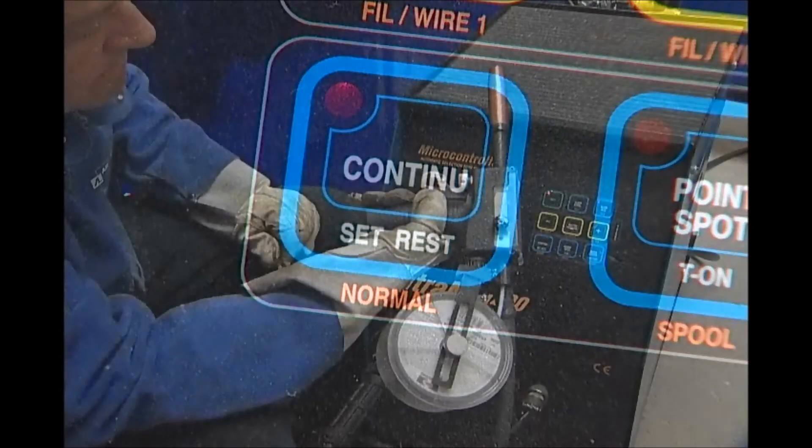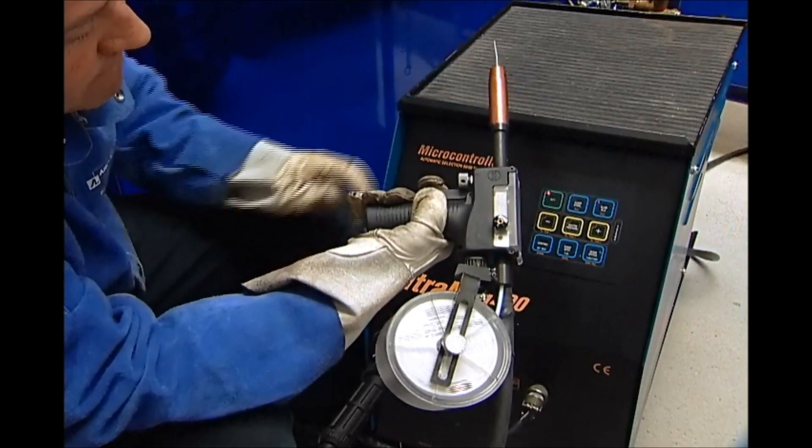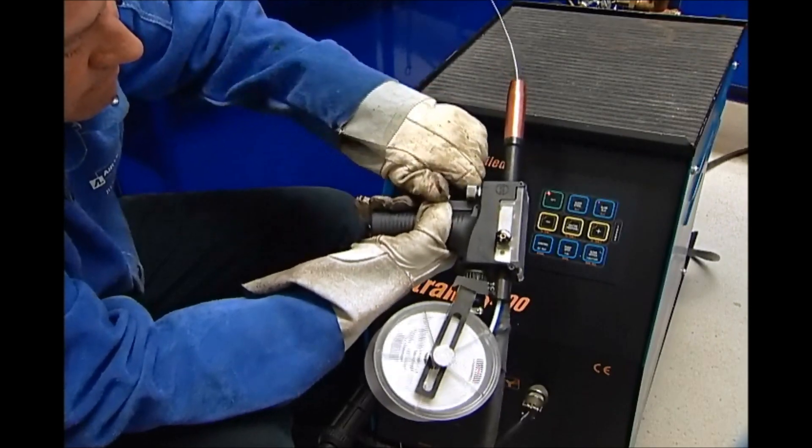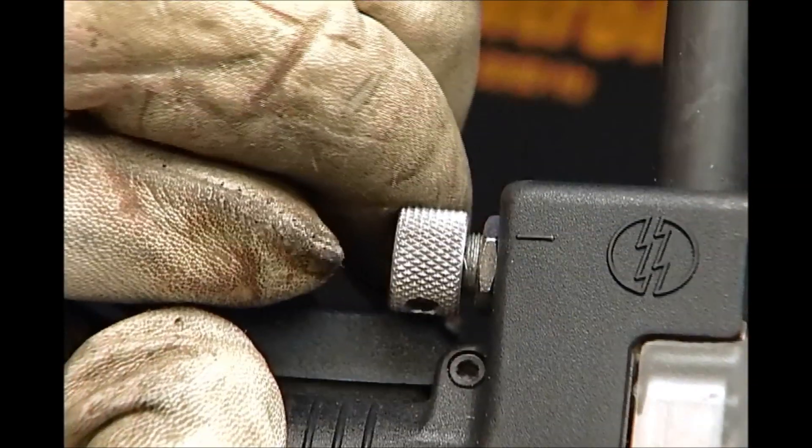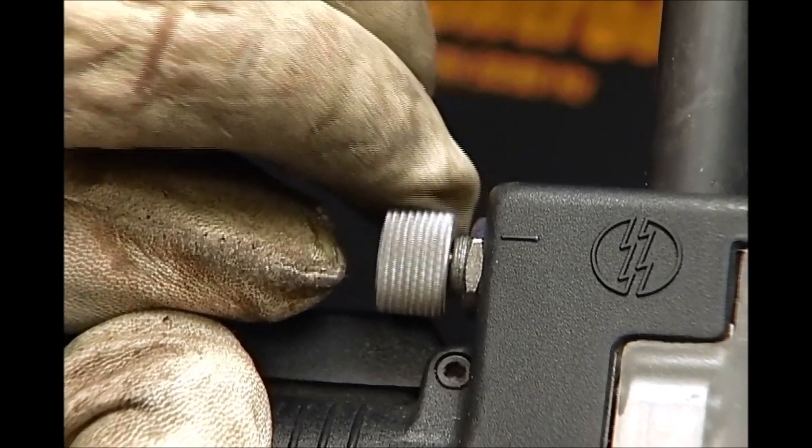The Ultrameg 200 is a synergic welder where the wire speed and current are controlled together by this knob on the spool gun.